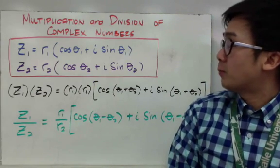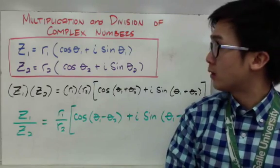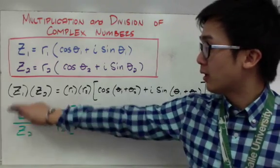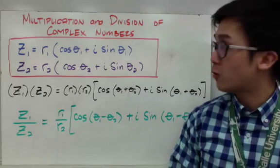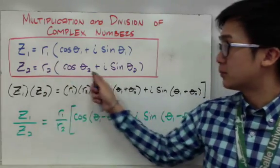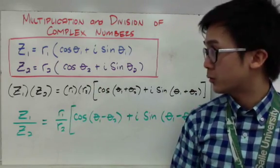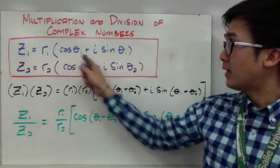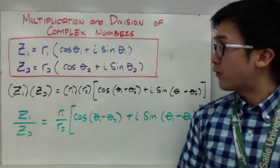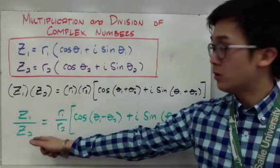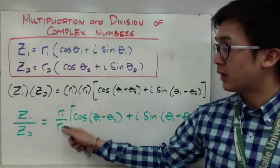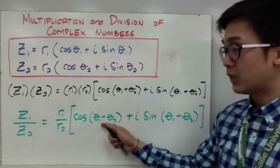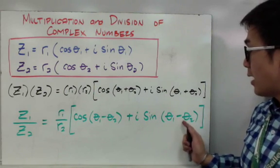Now we can multiply and divide complex numbers using these formulas. Given z₁ = r₁(cosθ₁ + i·sinθ₁) and z₂ = r₂(cosθ₂ + i·sinθ₂), to multiply them you multiply r₁ and r₂ and add the angles. To divide z₁ by z₂, you divide r₁ by r₂ and subtract the angles: cosine(θ₁ − θ₂) + i·sine(θ₁ − θ₂).